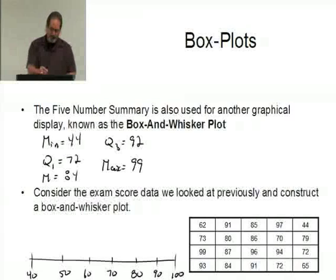Okay, where's 44? Well, 44, the minimum's going to be right about here, roughly right there. Q1, 72, where's that going to be? That's going to be over here, roughly, somewhere in there. 84 is the median, that's going to be roughly there.